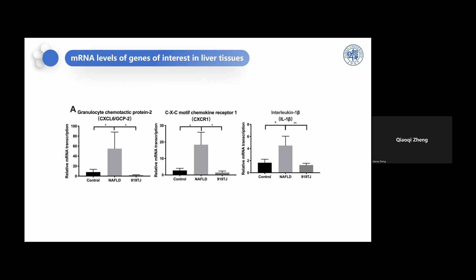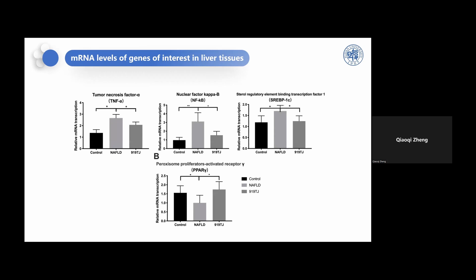We have known that 919 can treat NAFLD in rats, and then we searched for its mechanism through molecular experiments. The mRNA expression levels of genes associated with inflammation and lipid metabolism were measured in the liver using PCR. You can see that CX3CR1 and IL-1β were higher in the liver of the model group than control. However, they were remarkably lower in the liver of the TJ group. Also, TNF-α, NF-κB, and SREBP-1c were remarkably higher in the model group than control, whereas PPAR-γ was significantly lower. But all these changes were reversed in the TJ group.